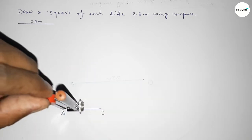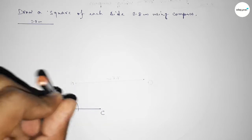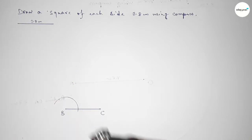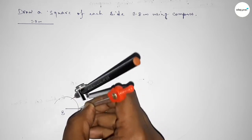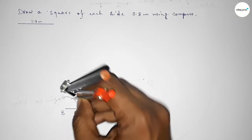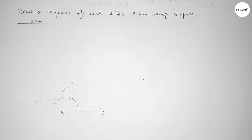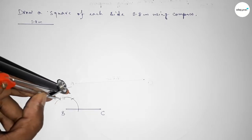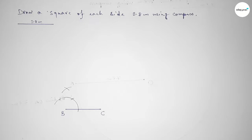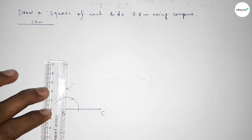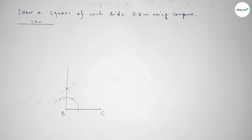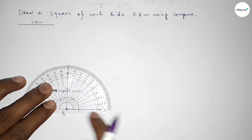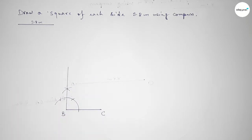Taking any length and drawing an arc. With the same length, putting the compass here and cutting here, then putting the compass here and cutting here, and drawing an arc again with the same length. Both curves intersect at a point. Now joining this line to get a 90 degree angle. Checking — this is perfectly a 90 degree angle.